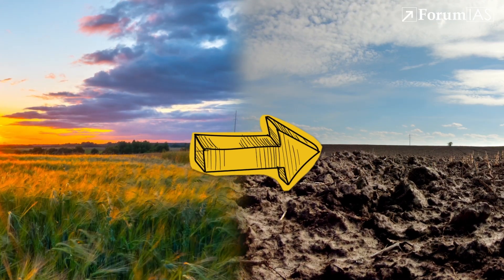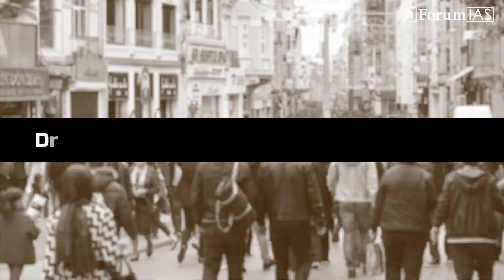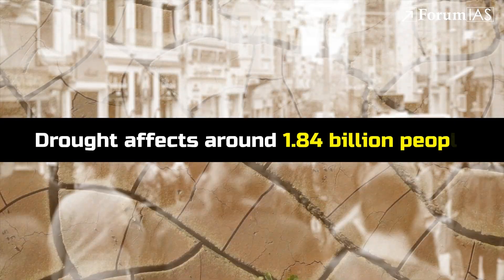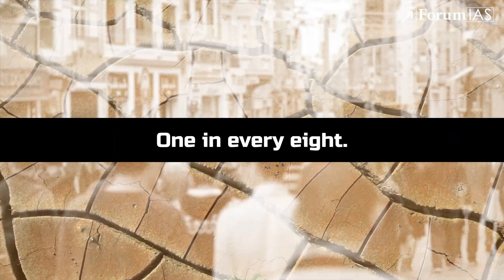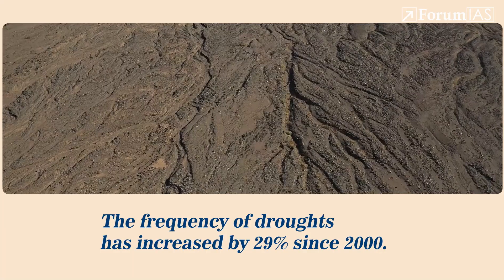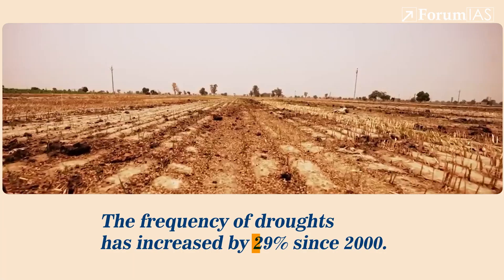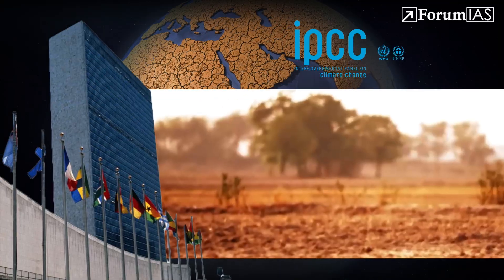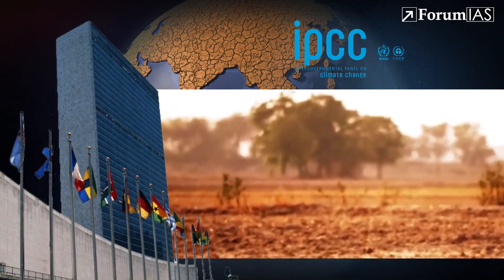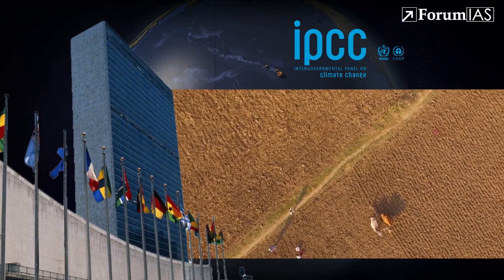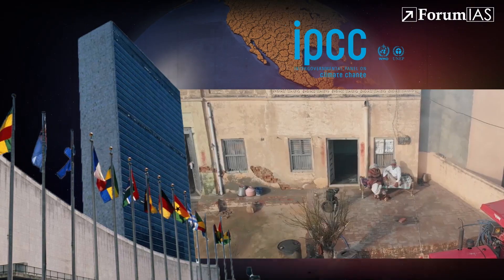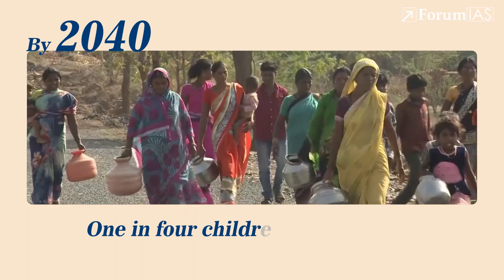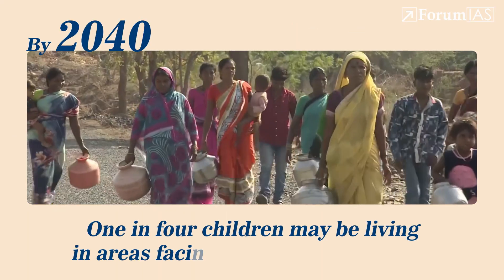Globally, drought affects around 1.84 billion people — one in every eight — and the frequency of droughts has increased by 29 percent since 2000. The IPCC warns that every region of the world is likely to see more heat waves and water shortages in the coming decades. By 2040, one in four children may be living in areas facing extreme water stress.